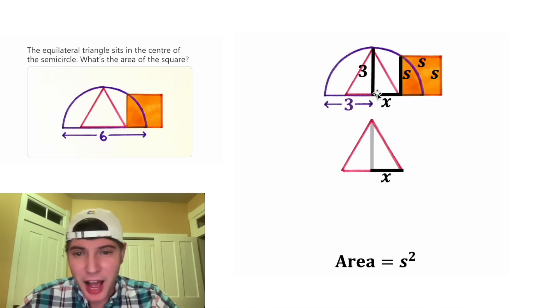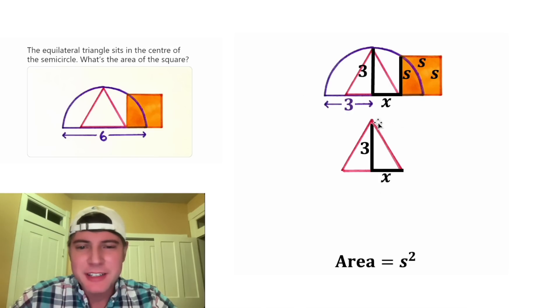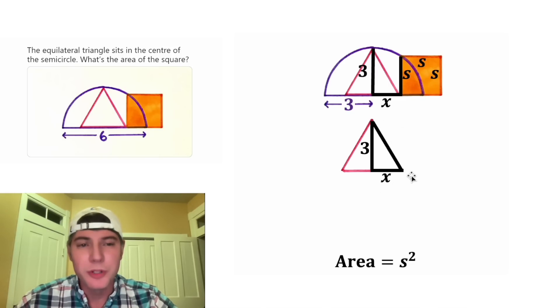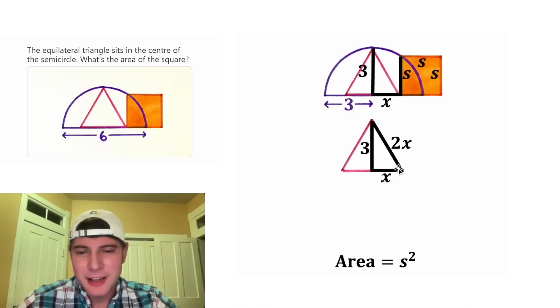That means that the height of this equilateral triangle is equal to 3. And if we connect this vertex to this vertex, we have another right triangle. The hypotenuse of our new right triangle is the same as a side of our equilateral triangle. And since X is half the distance, the whole distance would be 2X. And now we have three sides of our right triangle.